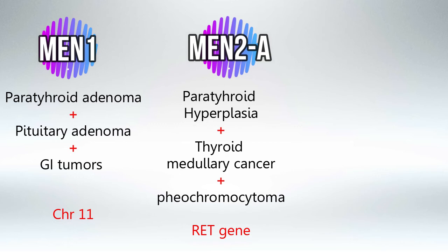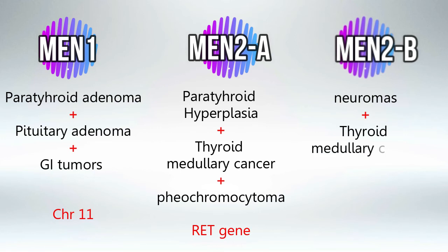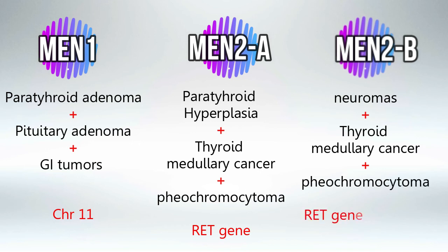Finally, MEN2B is associated with neuromas, plus medullary thyroid cancer and pheochromocytoma as well. It is also associated with the RET gene and with Marfan syndrome. It's important to know that all MEN mutations are autosomal dominant.